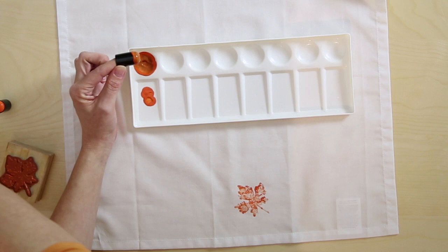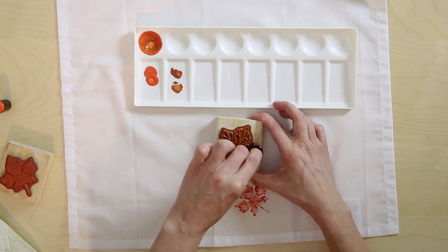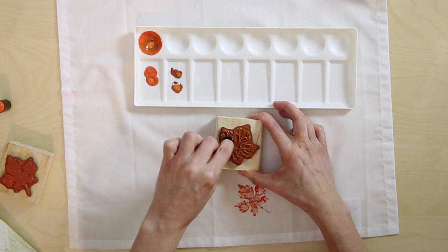Just mix that in. Again, dab that off if you get a little bit too much on, and then just apply that directly to your stamp. Not so much that the paint is pooling, but so that it's pretty well saturated and covered.